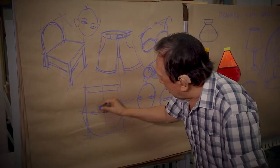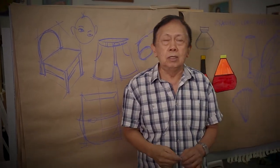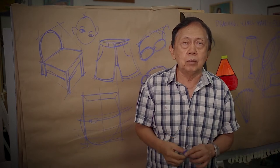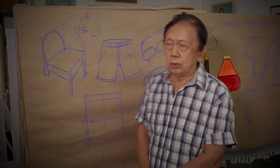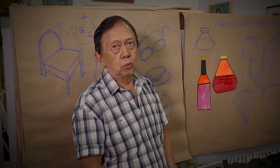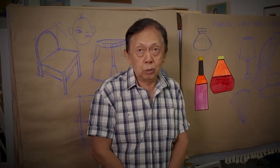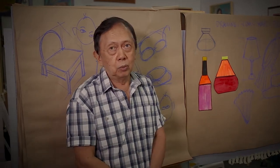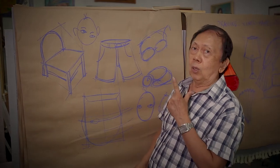Kung halimbawa nakaharap yung tao, tatlong position ng mukha ng tao: una, ito - front view. Tapos, ito - side view. Tapos, ito - three-fourth view. Ito pinakamagandang position ng mukha ng tao - three-fourth view. Kaya kung papakuha kayo ng retrato, three-fourth view.